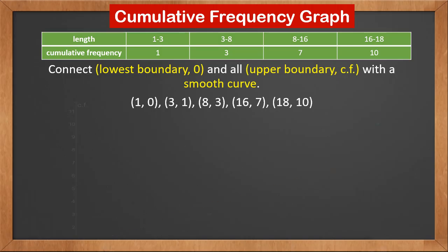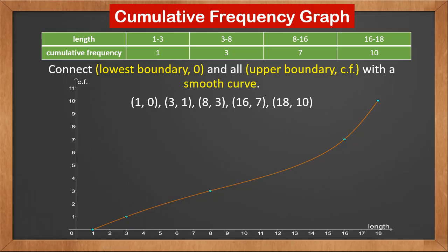Now we can connect these 5 points with a smooth curve. Remember to use a smooth curve, not straight lines. The y axis is always cumulative frequency cf. The x axis is whatever the data represents. Here it is length.